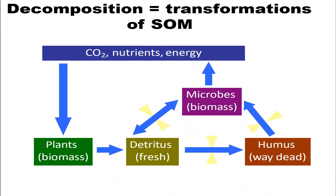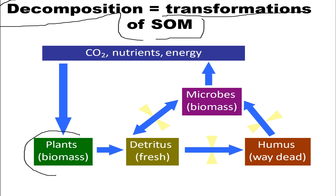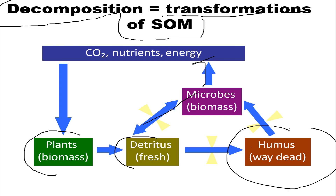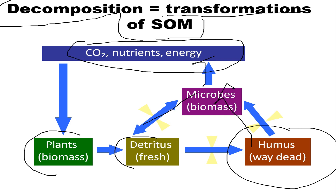To wrap up, here is a graphical overview: decomposition is the transformation of soil organic matter. Plants get converted to detritus, which is then processed by microbes into CO2, energy, nutrients, and humus. This is how dead organic particles, with the help of microbes, get converted into nutrients, energy, and CO2 — a concept also discussed in the previous video.